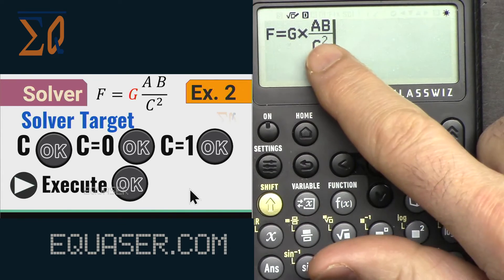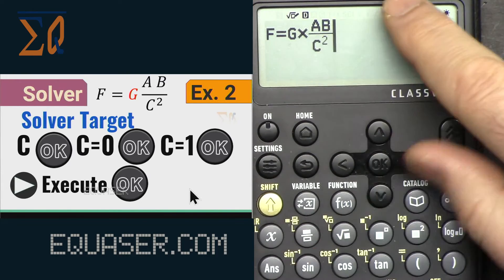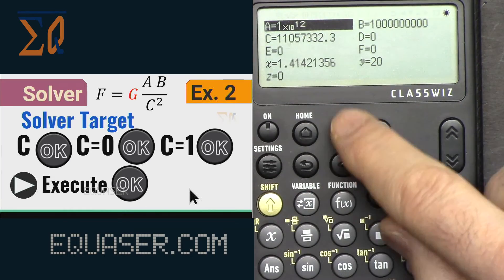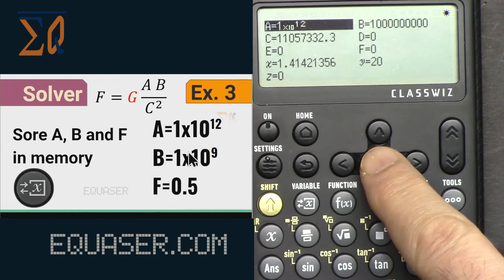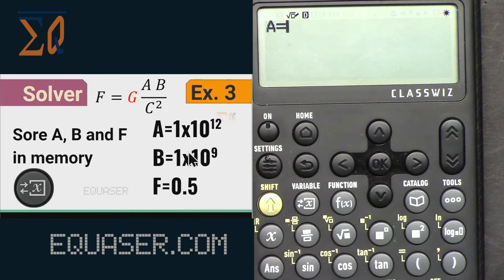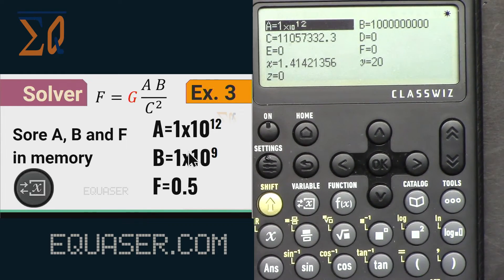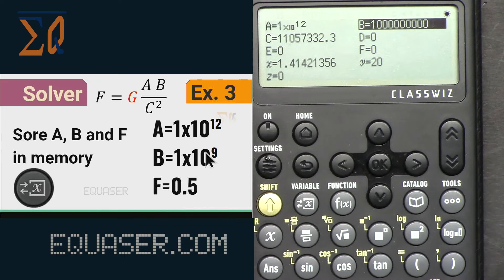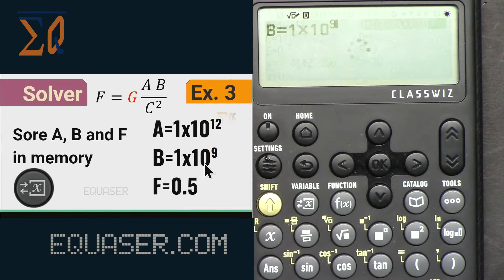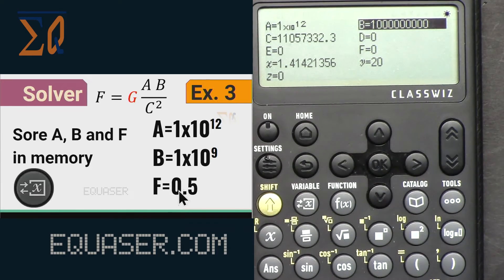Our formula is correct but let's see our memory. Let's edit it. 1 times 10 to the 12 equal, and then let's go to b, 1 times 10 to 9, 1 times 10 to 9, and then equal. And f, f is 0 here. That's why. Edit 0.5 and then equal.